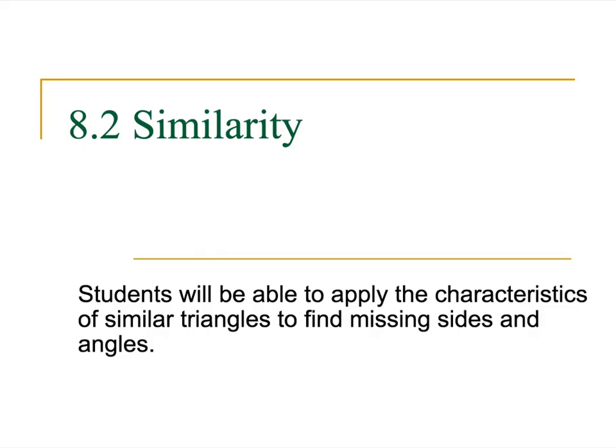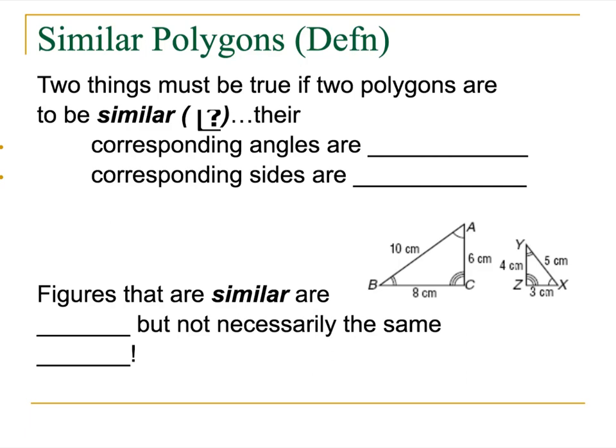So let's hop to it here, we've got 8.2 similarity. So we're going to be able to apply some fancy similarity type stuff here, it's going to be awesome, it's going to be rad and cool. Alright, so there are two things that must be true if polygons are to be similar. That little question mark here, let's cross it out, that should be the similarity sign, just like a tilde. My old college professor used to call it squiggle.